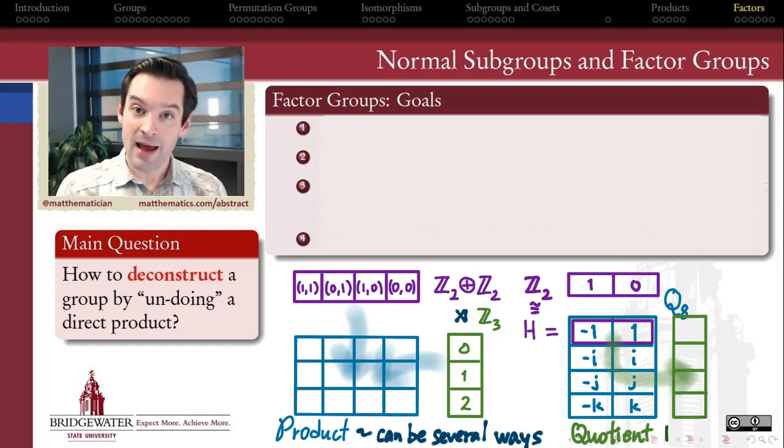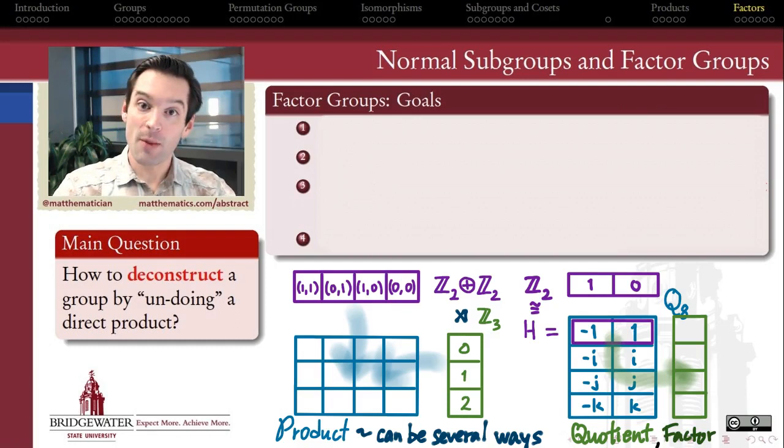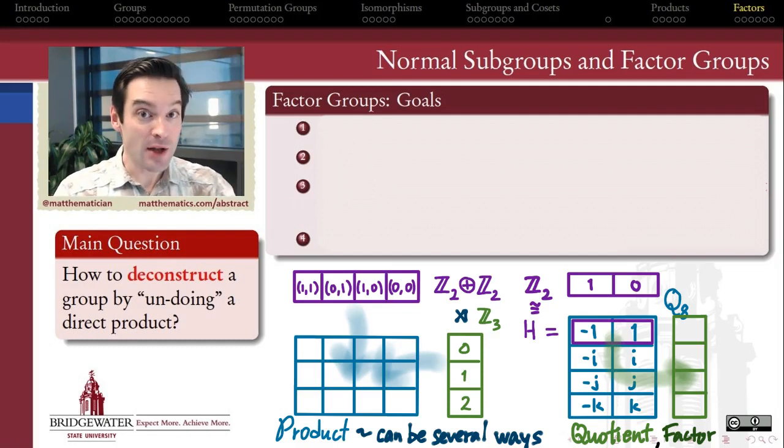So we want to understand not how to form a product, but how to form a quotient, how to pull apart a group along lines that can then be reconstructed using a product. Basically, how do we undo a product construction to discover the constituent pieces that could make up this group if we were to take a product of them again?